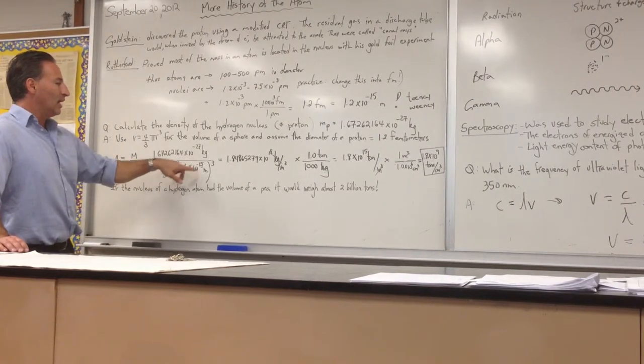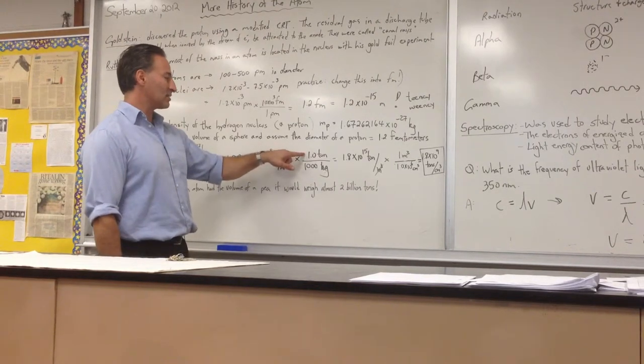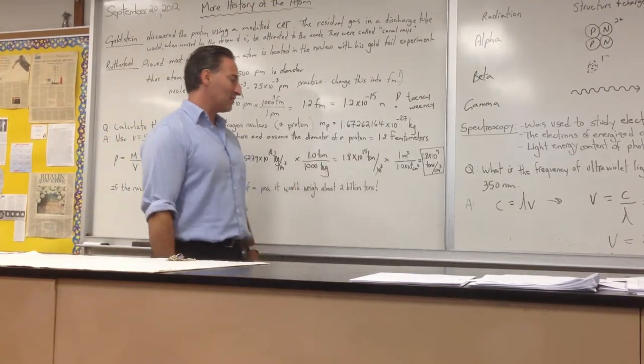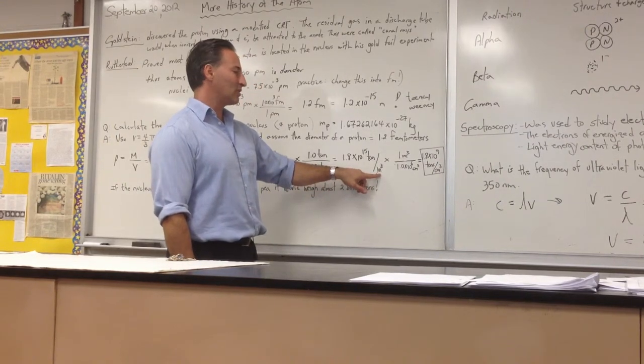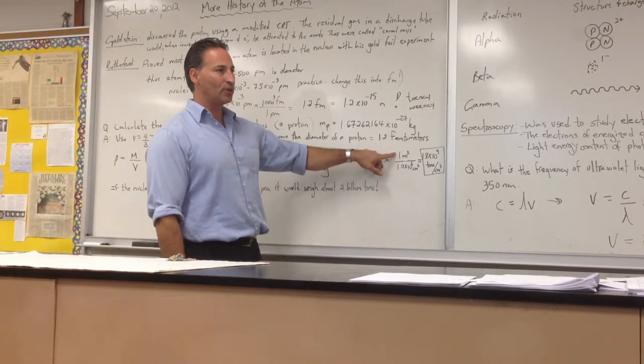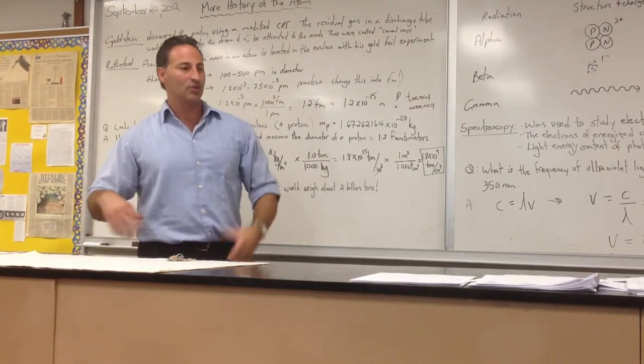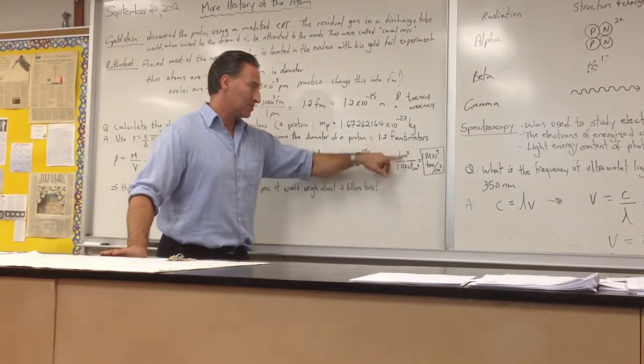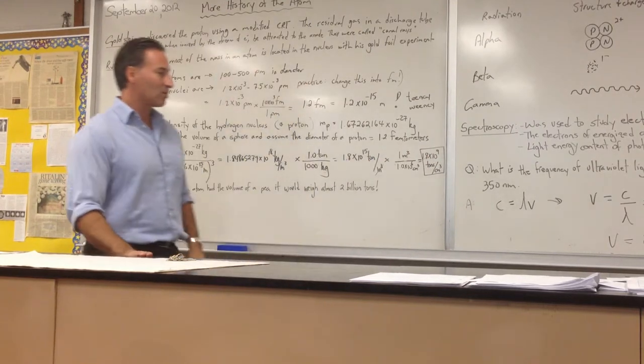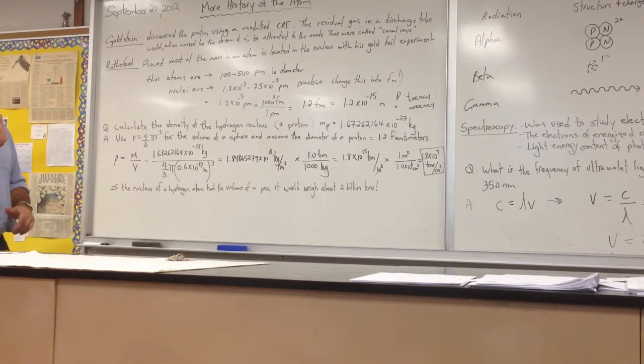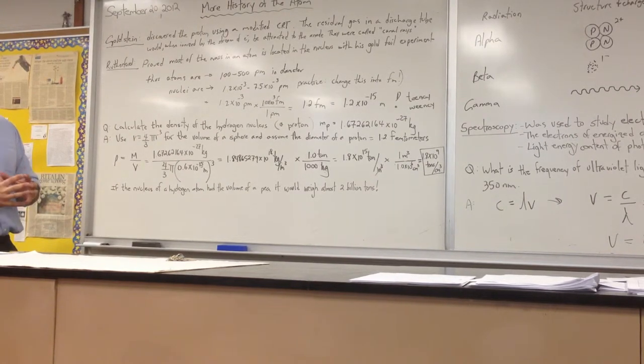And the answer we get is 1.8 times 10 to the 18 kilograms per meters cubed. And just for a little practice in dimensional analysis, I converted kilograms into tons. There's one ton per 1,000 kilograms. So that's 1.8 times 10 to the 15 tons per meter cubed. But let's put it more in perspective and change the volume measurement to centimeters cubed. So there's a million centimeters cubed per meter cubed. Remember, a meter is 100 centimeters. But because we have a volume measure, it's length by width by height. So it's 100 times 100 times 100. That's why it's a million-fold difference between a meter cubed and a centimeter cubed. So the density of the nucleus of an atom, of a proton, is 1.8 times 10 to the 9 tons per centimeter cubed. Almost 2 tons per centimeter cubed. So for the nucleus of a hydrogen atom with the size of a pea roughly, it would weigh 2 billion tons.